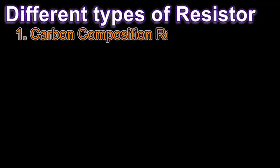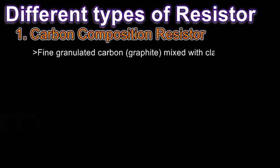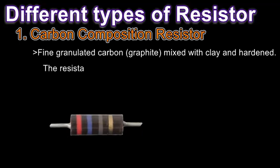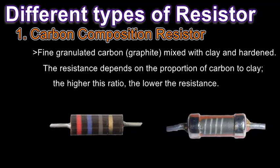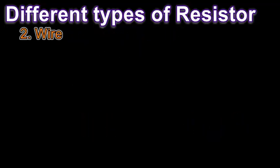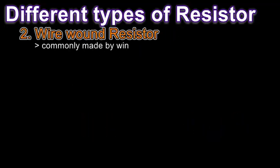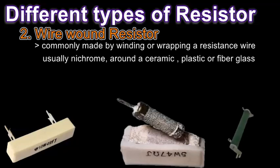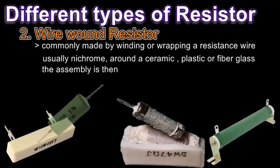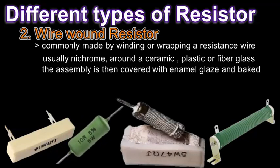Now let's look at the different types of resistors. The first is the carbon composition resistor — it is made of fine granulated carbon mixed with clay and hardened. The resistance depends on the proportion of carbon to clay; the higher this ratio, the lower the resistance. The next is the wire wound resistor, made by winding a resistance wire, usually nichrome, around a ceramic, plastic, or fiberglass core. The assembly is covered with enamel glaze and baked at high temperature. They are used in circuits that carry large currents.